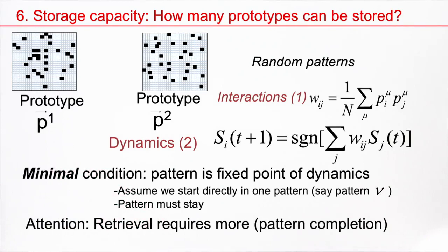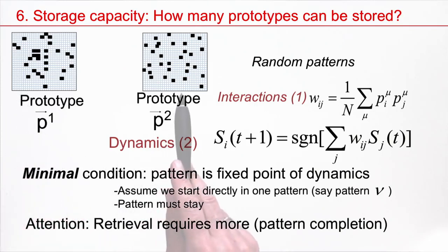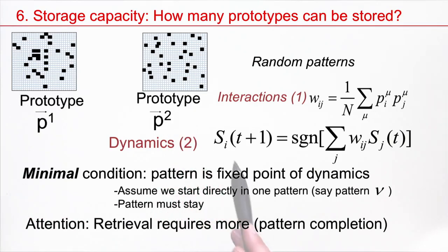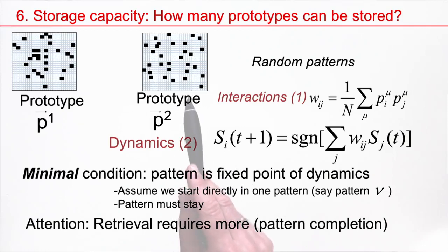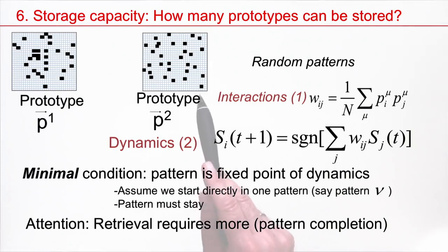However, that's a little bit hard to calculate, so we make a really minimal condition. Suppose you start directly in a prototype — say prototype number 2. Then at least, if you run the dynamics, you should not move away from the prototype. You should stay in the prototype. So we assume we start in one of the prototypes and the minimal condition is that the pattern should stay.